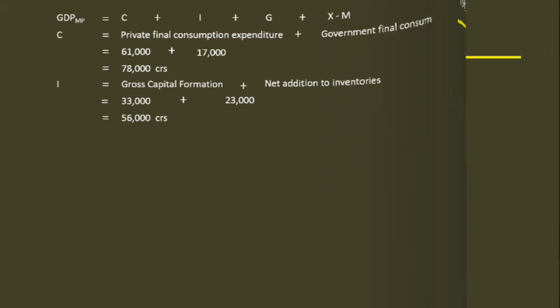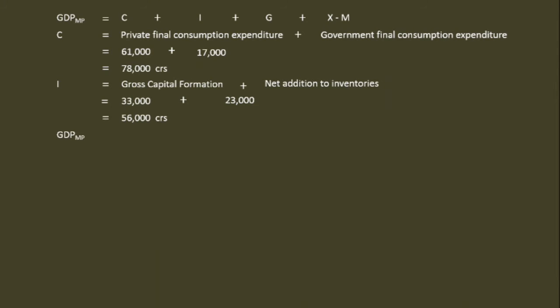Gross Domestic Product at Market Price equals Consumption Expenditure 78,000 crores, plus Investment Expenditure 56,000 crores — there is no Government Investment Expenditure — plus Net Exports 10,800 crores, giving a total of 1,23,200 crores.